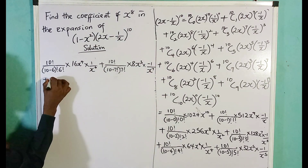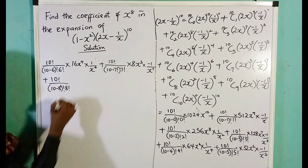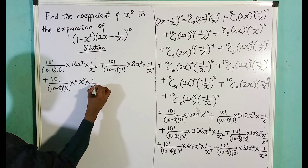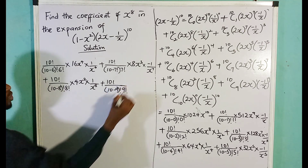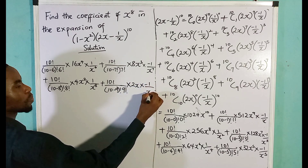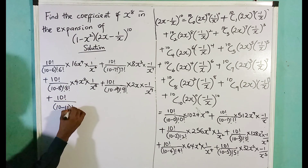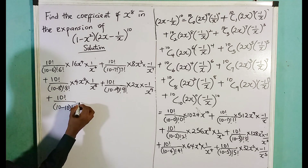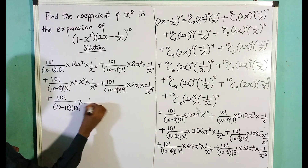Plus 10 combination 8 = 10! / (2! × 8!) times 2^2 = 4, so 4x^2, times 1/x^8. Plus 10 combination 9 = 10! / (1! × 9!) times 2x, times 1/x^9. And lastly, 10 combination 10 = 10! / (0! × 10!) times 1, times 1/x^10.